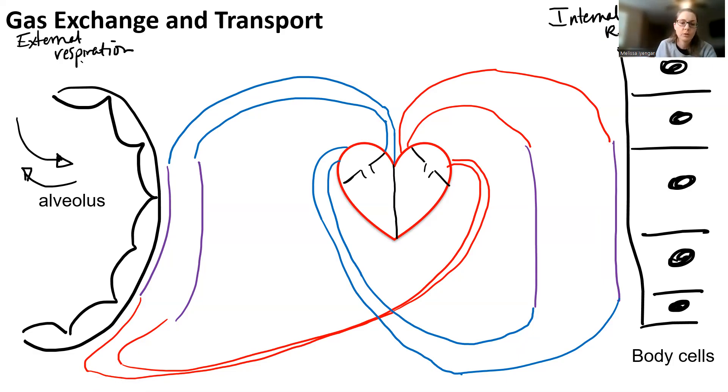So the first thing you want to do is you just want to set up where oxygen and carbon dioxide levels are going to be high and low. As air comes in, remember, our oxygen concentration in our alveoli is high. And remember, as blood comes off of the right side of our heart, we're going to have a low O2 concentration because our carbon dioxide concentration is actually higher.